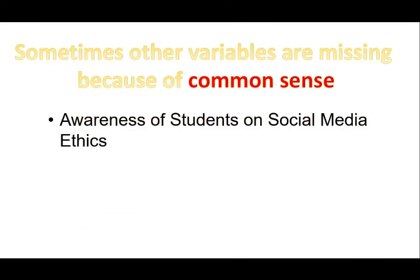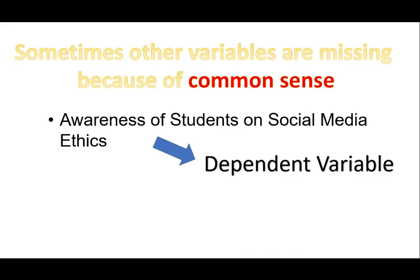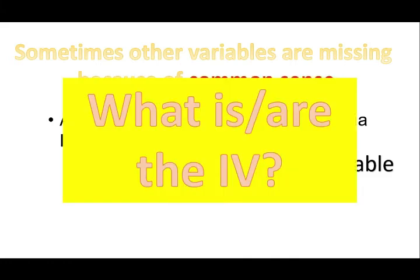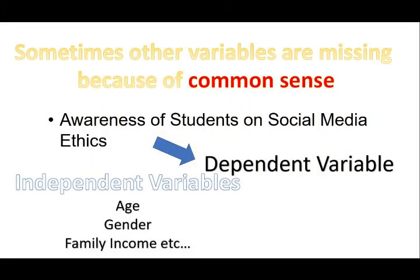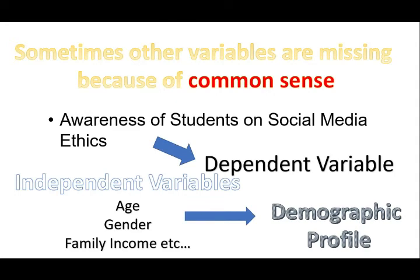Now, sometimes other variables are missing simply because of common sense — it's already there. For example, 'Awareness of students on social media ethics.' Can you identify which is the independent and which is the dependent? As you can see, the entire title here is the dependent variable — this is what we are going to study. The independent variables are age, gender, family income, and more — they are simply called the demographic profile. Common sense, right?